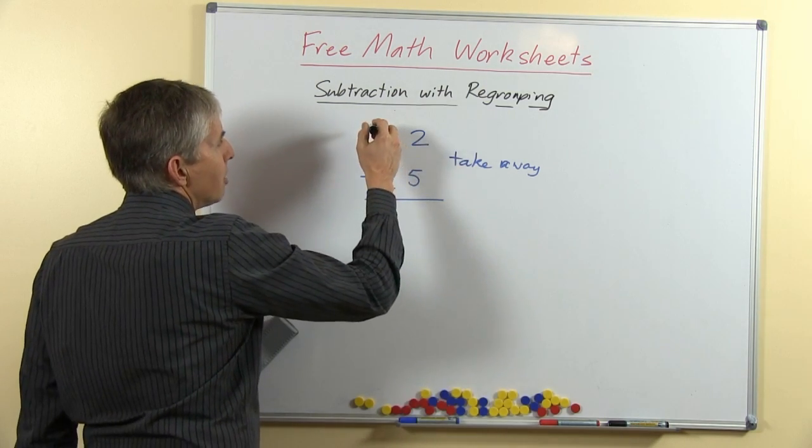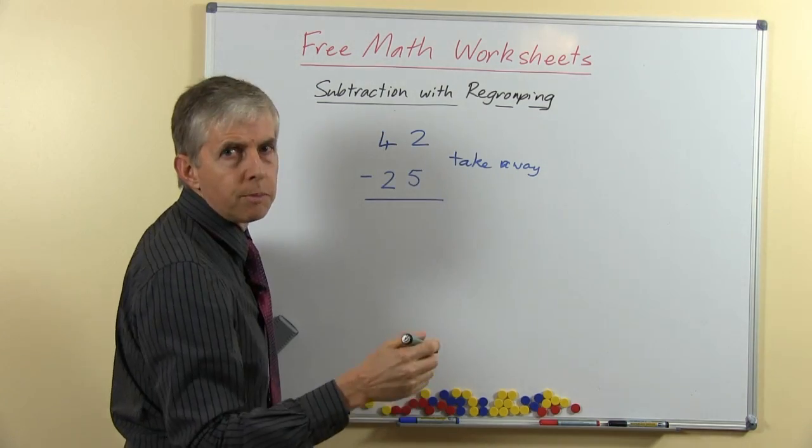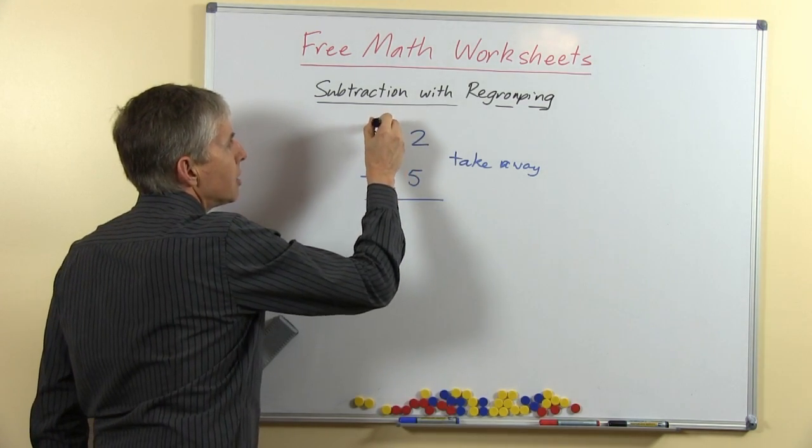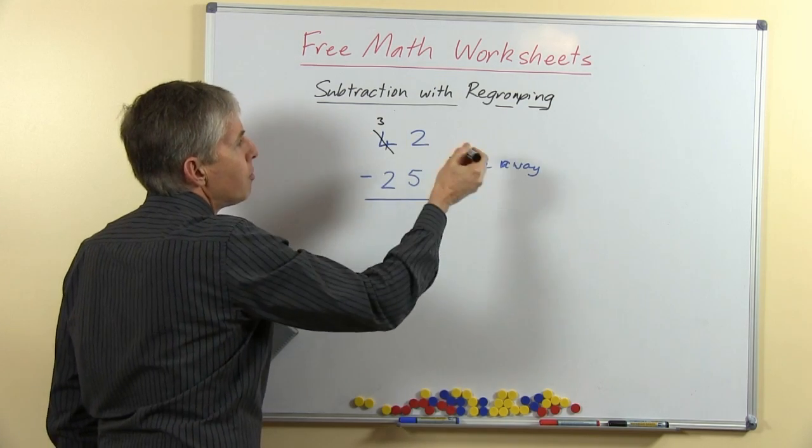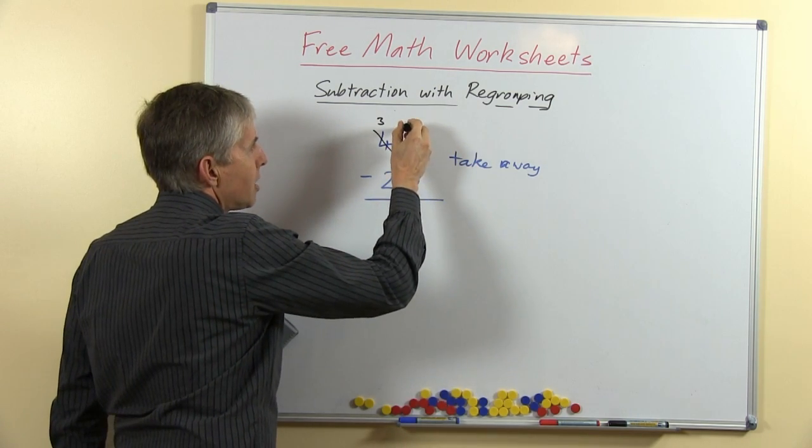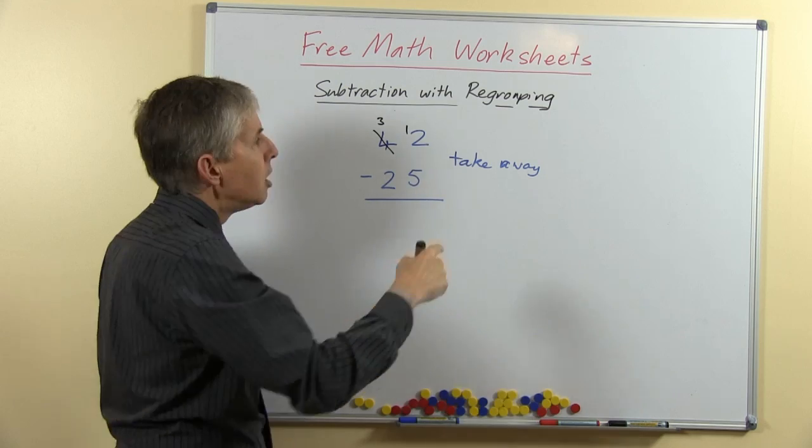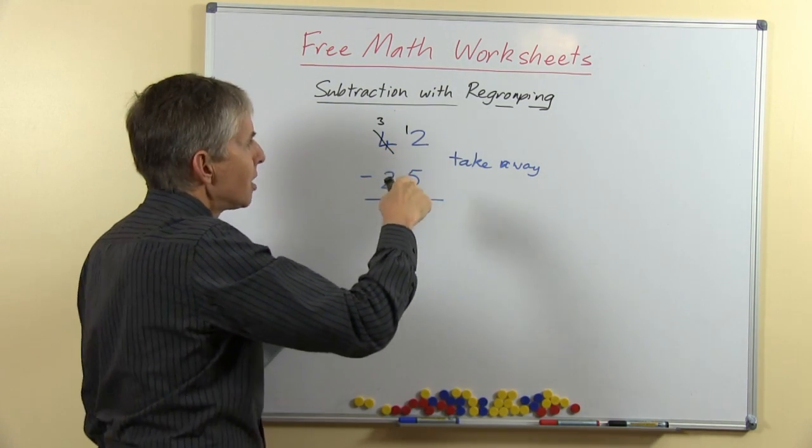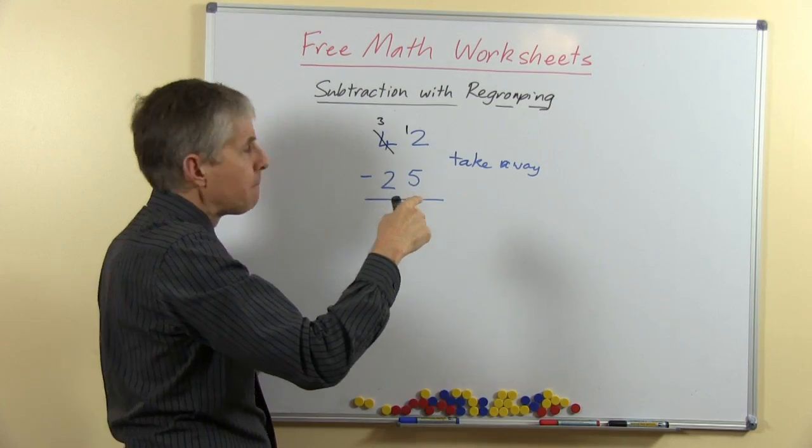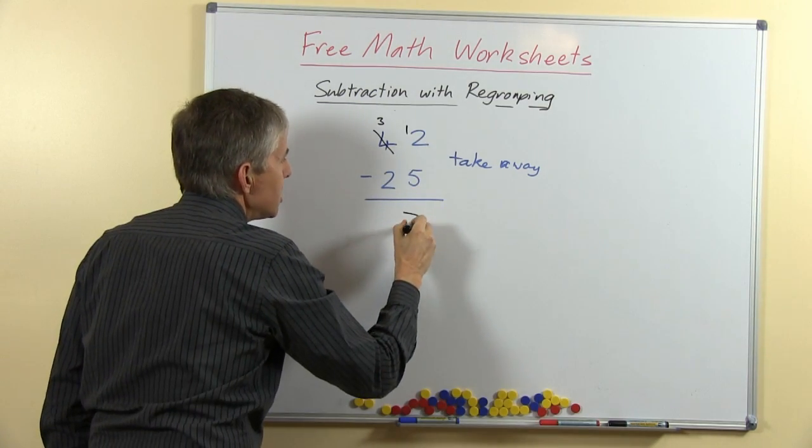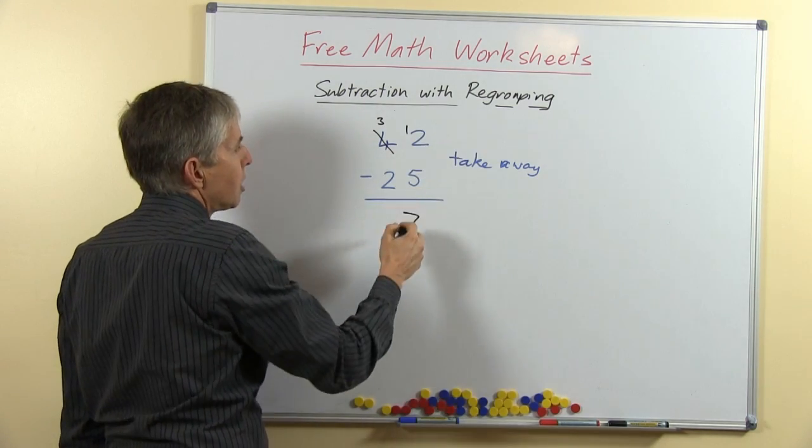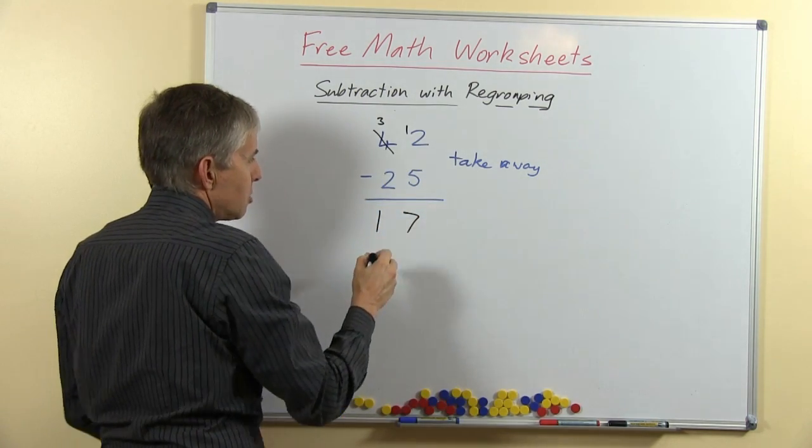2 take away 5 I can't do, so we're going to regroup or trade. We're going to take a 10, leaving 3 of them behind and regroup that into 10 ones. We'll write that as a 1 in front of the 2. You could cross the 2 out as well and write 12 if you want to, but I think that's more crossing out than you need. 12 take away 5 is a number fact, so it will help if students know their number facts. 12 take away 5 is 7, 3 take away 2 is 1.